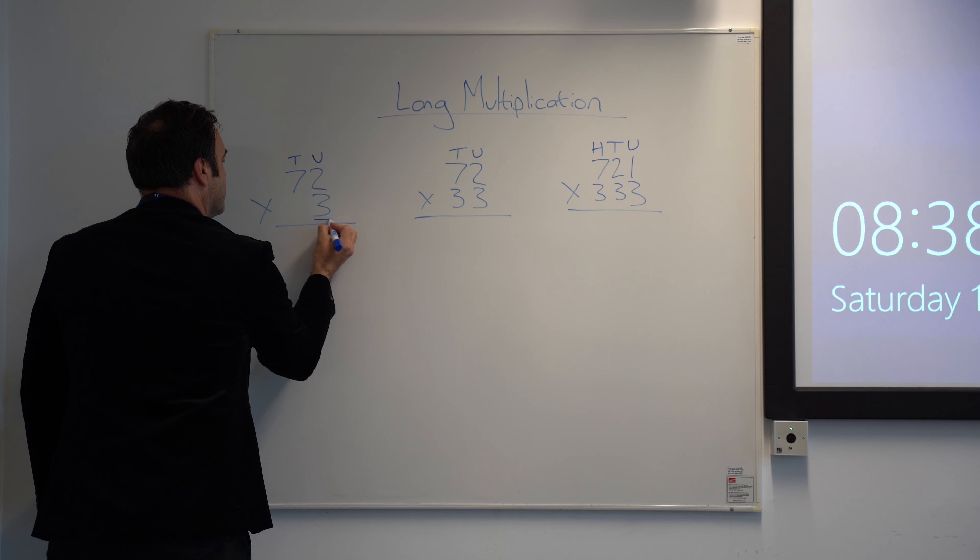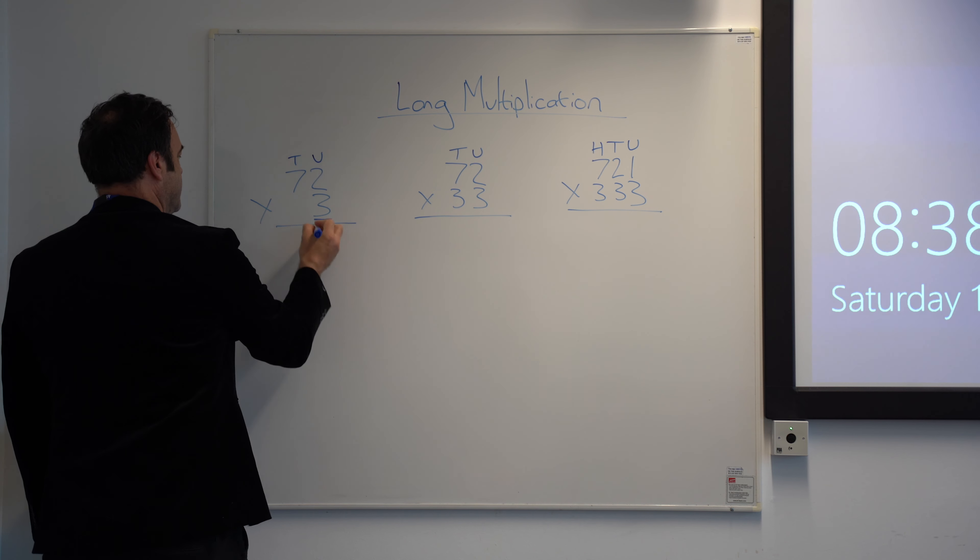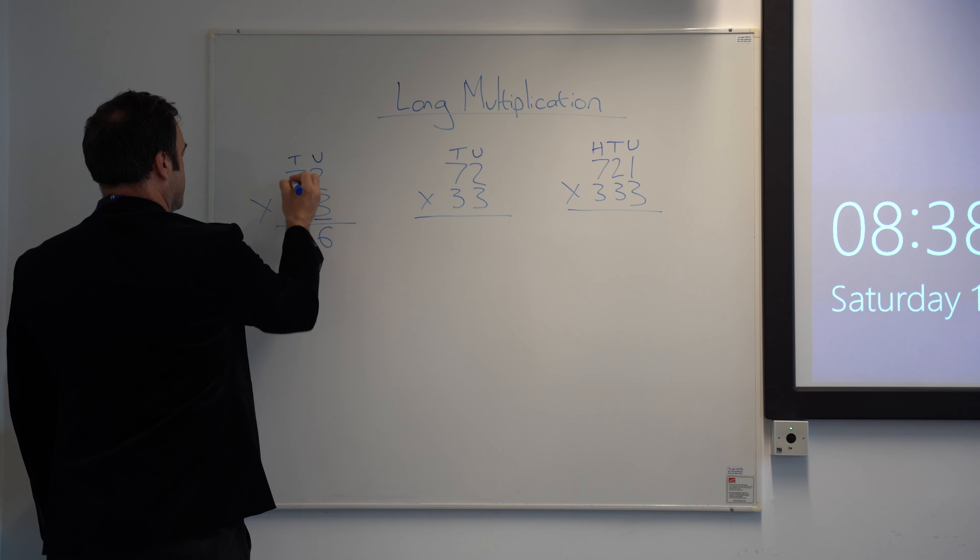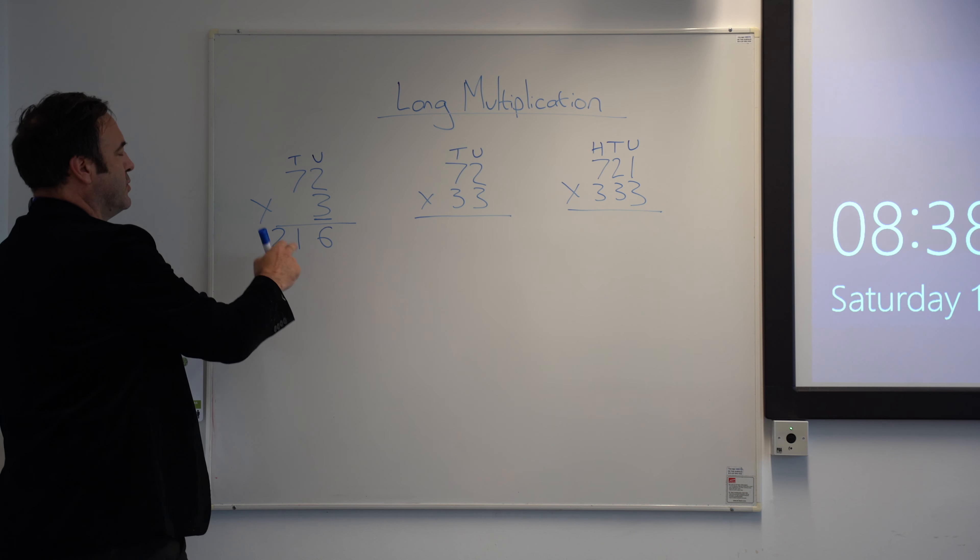So with this, the second row, this is what we're going to be using to direct the multiplying. So the units here, 3 times 2 is 6, 3 times 7 is 21. Now we normally carry the 2, there's nothing there, so it's 2, 1, 6.